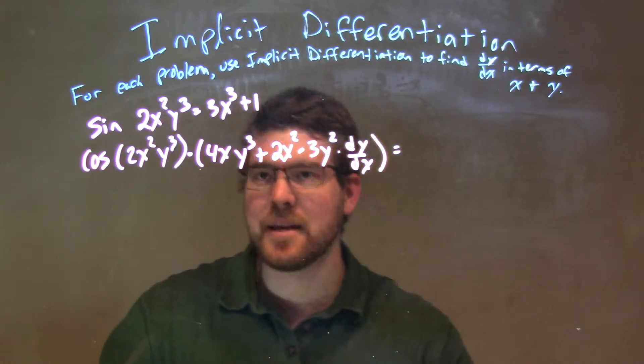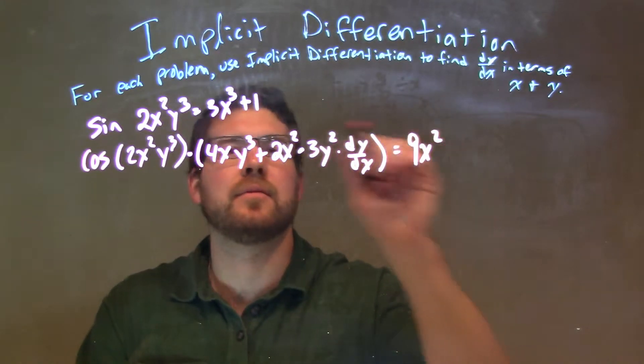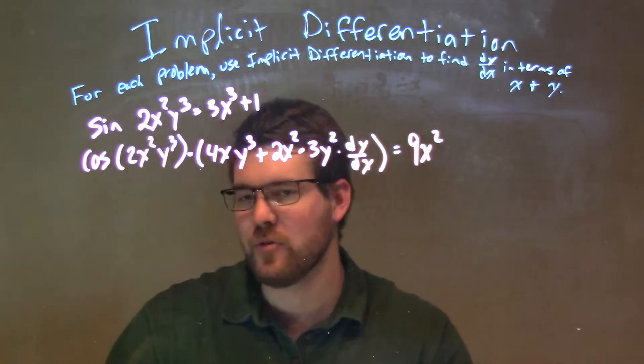That's equal to the right-hand side. This is a lot simpler: 3 times 3 is 9, so 9x squared. Derivative of 1 being 0.